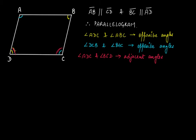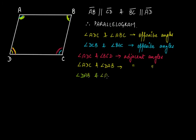Similarly, angle ADC and angle DAB form another pair of adjacent angles. And angle DAB and angle ABC is another pair of adjacent angles. Angle ABC and angle BCD is yet another pair of adjacent angles.